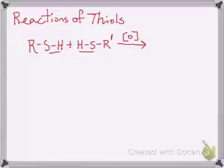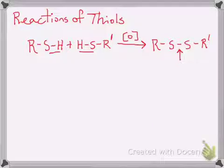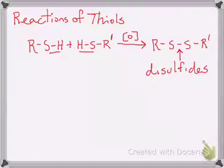What you end up getting in an oxidation reaction is this. Notice now our new bond that is formed between the two sulfur groups is right there. We call these disulfides. These disulfides are what is formed.